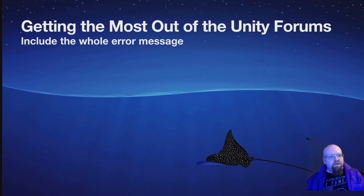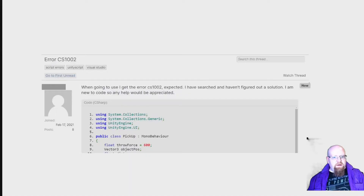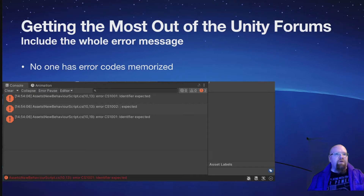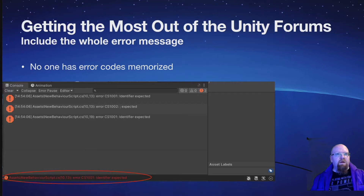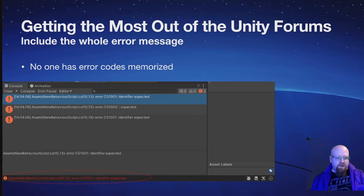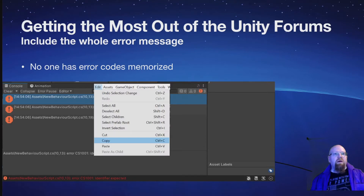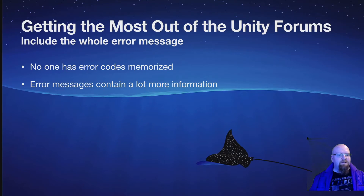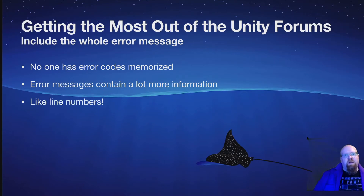The next thing to note is that you need to include the whole error message if you're getting one. No one knows what a bare error code means — we don't have error codes memorized. You can get the whole error message if you open up your console. This is accessible if you click on the bottom part of the Unity window, then click on one of the items and just hit copy. That will give you the whole error message, which contains a lot more information than just the error code, such as line numbers — which are especially helpful if the code you posted has code tags.